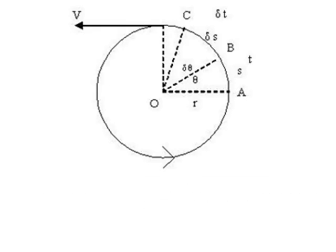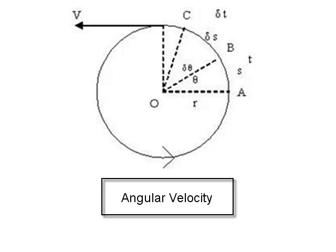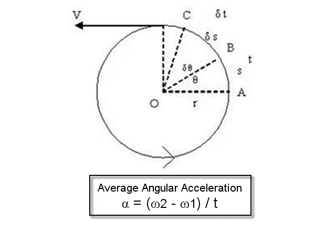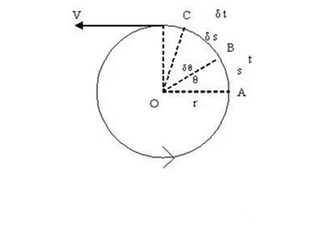When the body is not in UCM, that is when the angular velocity of the body is either increasing or decreasing, then the body possesses angular acceleration. So, if angular velocity of a body changes from omega 1 to omega 2 in time T, then average angular acceleration alpha is given as omega 2 minus omega 1 upon T.